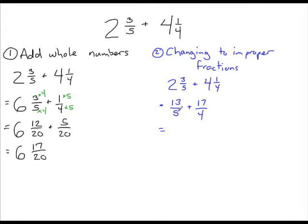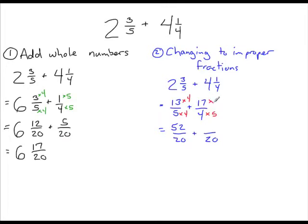Now we need to convert to a common denominator, because we cannot add 13 over 5 plus 17 over 4. As before, the lowest common multiple of 5 and 4 is 20. We multiply 5 by 4, so 13 times 4 gives us 52. We multiply 4 by 5, so 17 times 5 gives us 85. Now we can add the numerators: 52 plus 85 is 137 over 20.